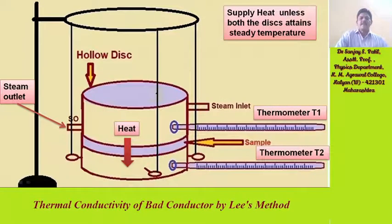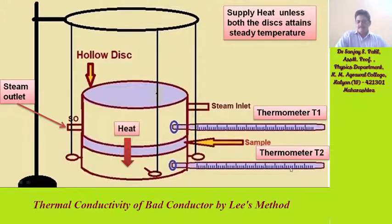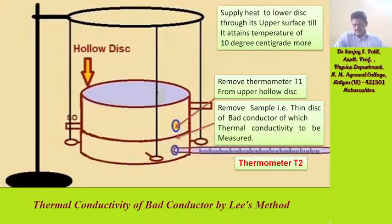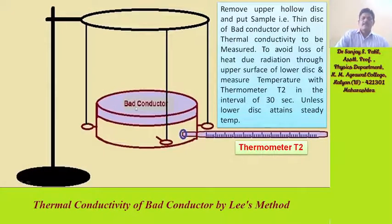This is the individual diagram for clarity. The upper hollow disk supplies heat to the lower disk through the slice of bad conductor. There is thermometer T1 and thermometer T2. Once both thermometers attain steady-state temperature, remove the slice of bad conductor and thermometer T1 from the upper hollow disk. Place the slice of bad conductor on the upper surface of the lower disk and take readings with thermometer T2 at intervals of 30 seconds or 0.5 minutes, until the lower disk attains steady-state temperature.